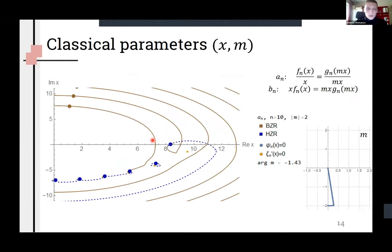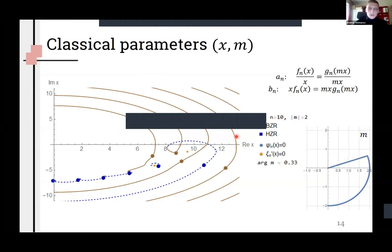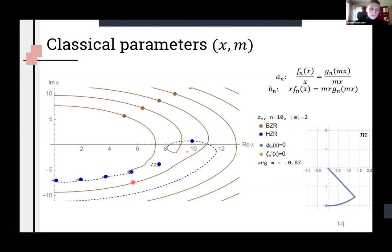x and y are convenient parameters but what's going on if we consider this problem in more classical size and refractive index. In this case BZRs and HZRs. BZRs try to keep relation between m and x which equals y.